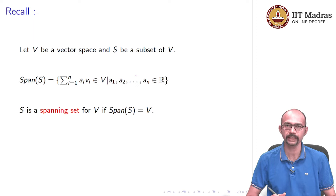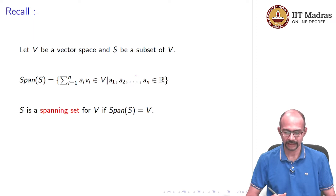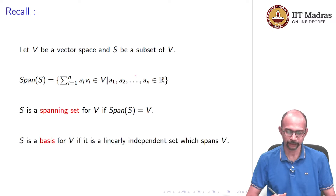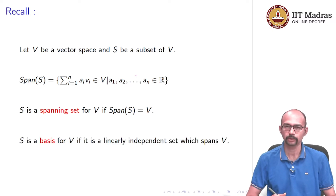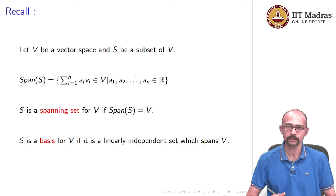Any vector in V can be written as a linear combination of vectors from S. And then finally, we defined a basis for V to be a linearly independent set which spans V. So, it is both spanning and linearly independent.